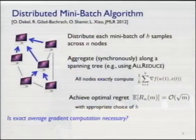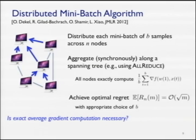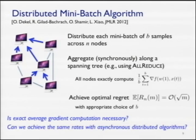A key question for this talk: do we need to exactly compute the average? In the model discussed so far, we do our mini-batching and then synchronously compute the exact average. We'd like to move toward a more asynchronous manner, randomly interleaving gradient updates with arriving samples. The motivation is to develop a fully asynchronous method.